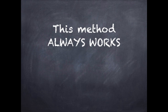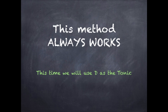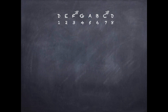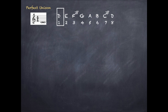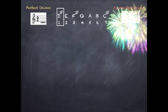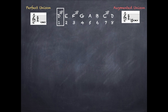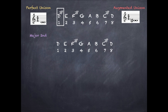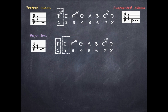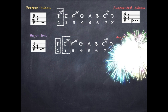This method always works. This time we're going to use D as the tonic to prove the point. This is our D major scale. A perfect unison is D repeated twice. An augmented unison: sharpen one of the Ds and we end up with D and D sharp. Place them next to each other on the stave, remembering to use accidentals to show one is D natural and one is D sharp. A major second interval would be D to the second note, which is E. To make an augmented second interval, sharpen the top note of the major second, so we go from D to E sharp.